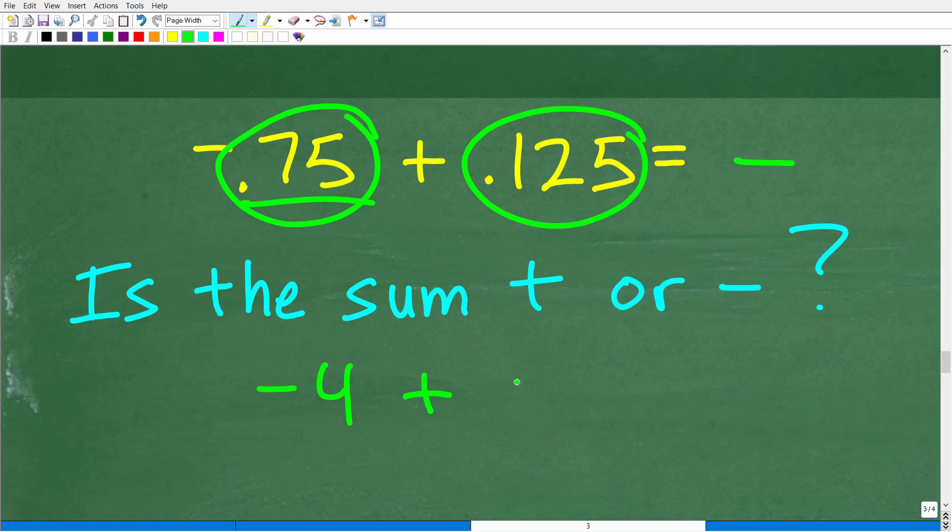So you can kind of think of an easy problem like this, maybe like negative four plus one, right? So what is the sign of this answer or sign of this question? So negative four plus one is negative three. So in this case, because this is a larger value and it's negative, our answer will be negative. Okay, so to add these numbers, we need to subtract these two decimals and then put a negative sign in front of the answer.